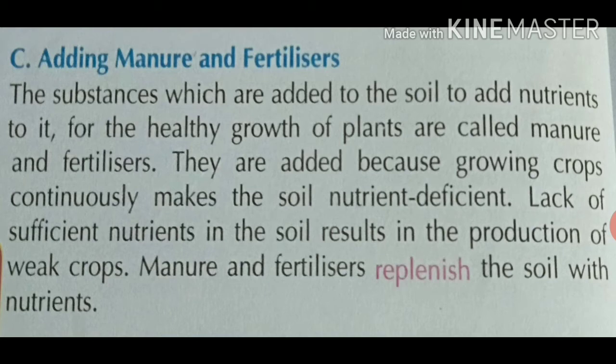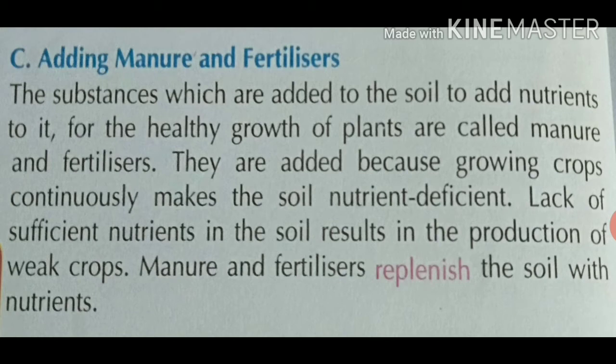Farmers ripen out the organic matter and mix it into the soil to increase the fertility of the soil. Fertilizers are chemical substances and they are made in industry. Both manure and fertilizers are added to the soil to add nutrients to it.